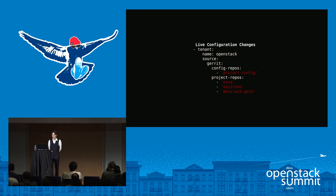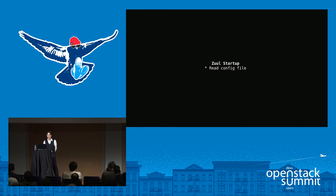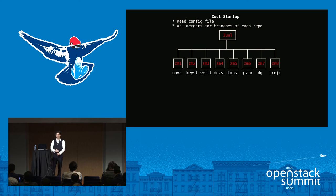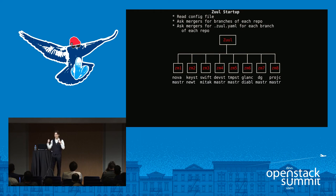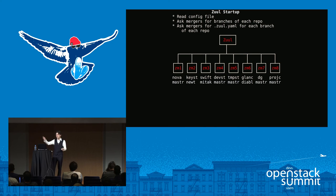When Zuul starts up, it loads that config file and then talks to those mergers. We have eight of them. It says 'hey mergers, go to all these repositories and get me a list of all the branches.' They churn on Git operations for a while and return that list. Then Zuul says 'okay mergers, go to every branch of every repository and look for a zuul.yaml file and return that to me.' So as Zuul starts up, it goes from having no configuration whatsoever to having this fleet of distributed workers collect its configuration from thousands of different places, returning it back to Zuul where it assembles it into a holistic whole configuration.